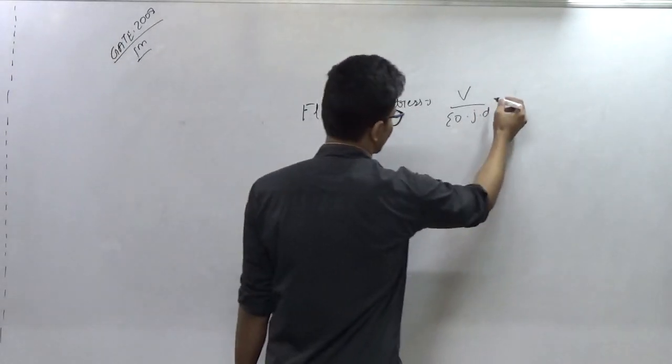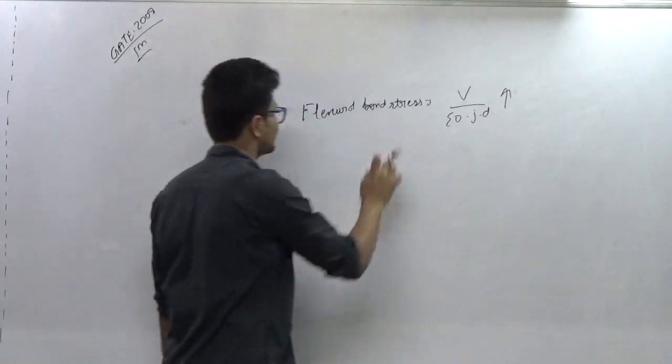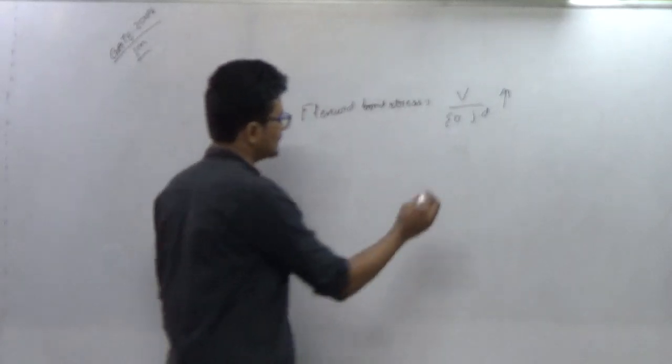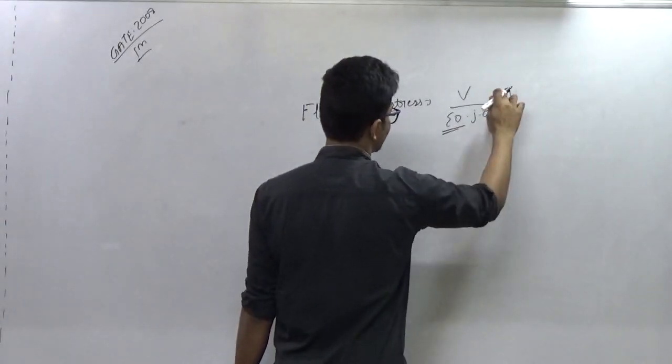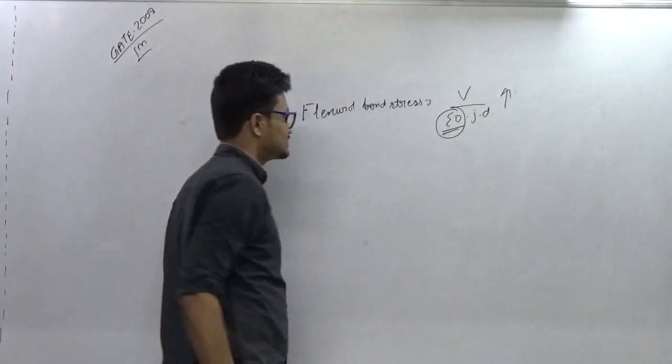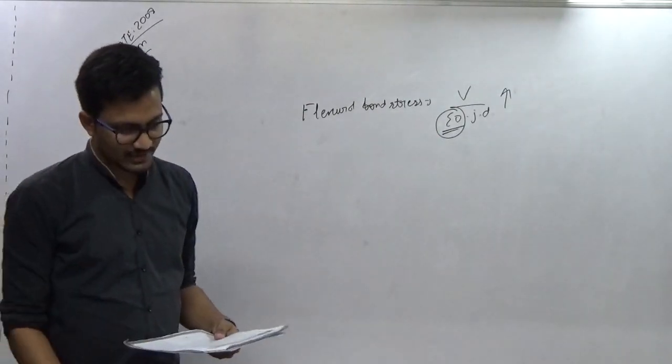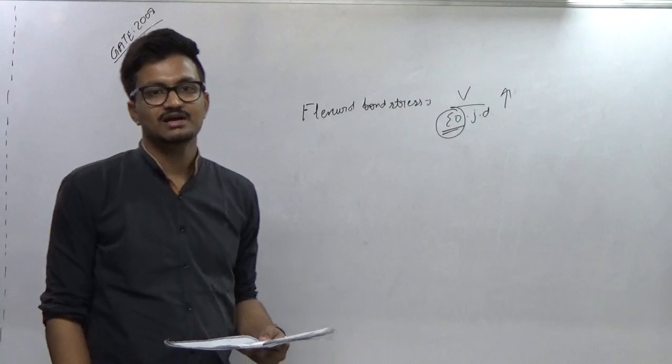So if this value becomes very high, the bond stress value will also be increased. The very easy way for reducing this value is to increase the summation O. That perimeter value is increased by providing smaller diameter bars and more in number.